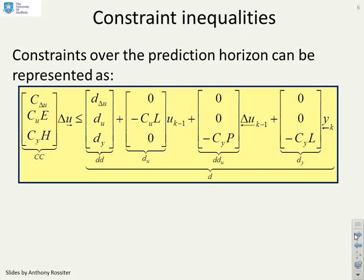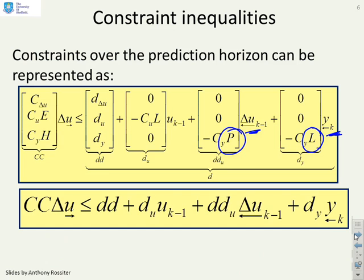If I look at the constraint inequalities, then again you'll find the difference is very subtle. For example, I've got a different P in this matrix here, and I've got L instead of Q in this matrix here. But they still multiply delta U past, they still multiply Y past. You'll get a different number of delta U past terms because you remember that P had a large number of columns, and so delta U past will have far more terms. But structurally, it looks the same.